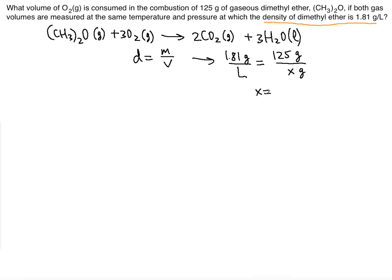Cross-multiplying, you get X equals 125 over 1.81, which gives you 69.06 liters. That value should be in liters — we're looking for volume — so that's the volume of dimethyl ether corresponding to 125 grams.